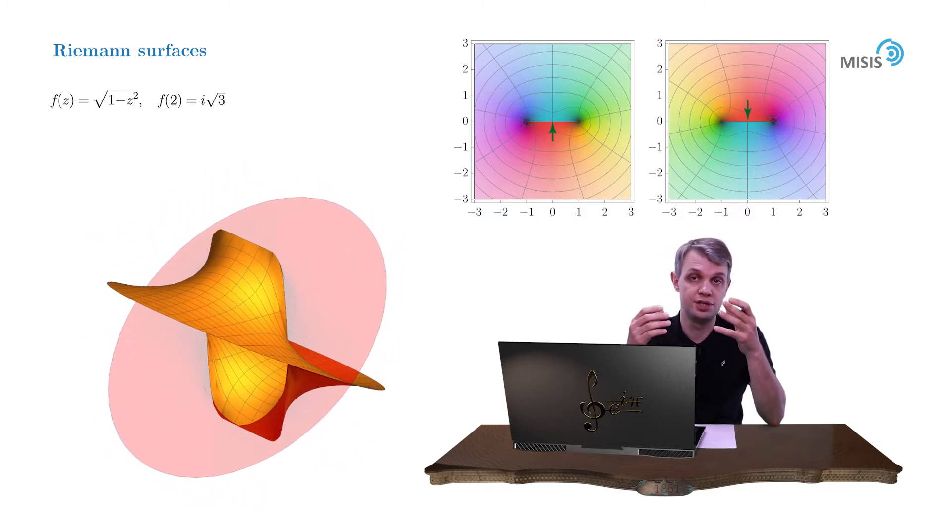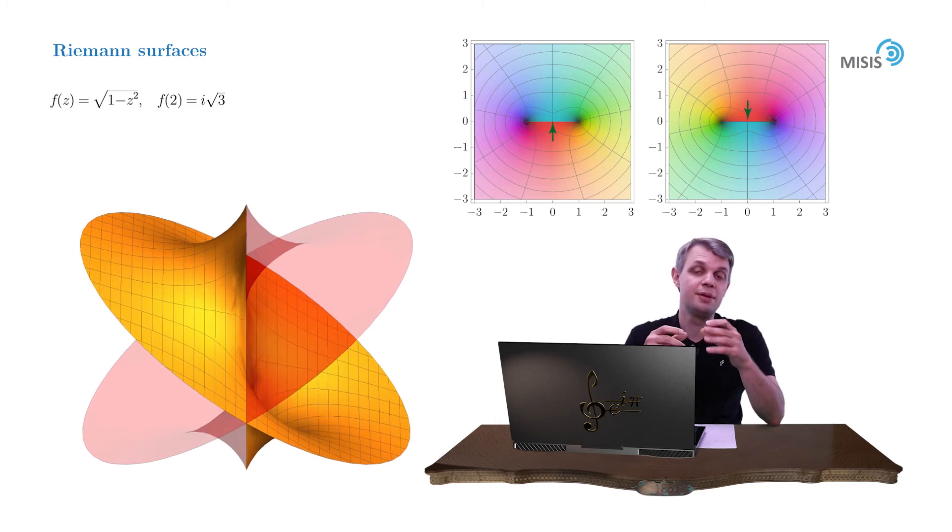And to see how this machinery works let us study some simple example. Namely the integral along the contour which is positioned on two Riemann sheets. And here we go.